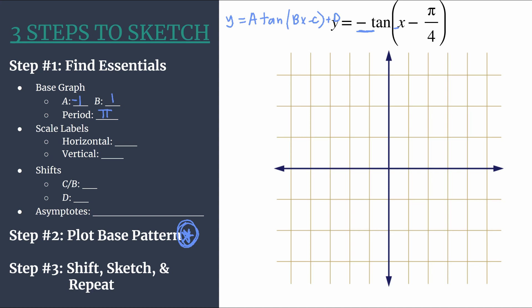Now that we have that information gathered, we can decide how to label our axes. For scale labels, this will be how we count each tick mark. We do this very intentionally for our horizontal axis. We take our period and divide it by four. That's what we'll use for our tick marks. So we'll count by π over 4. That ensures that every key piece that we plot for our base pattern and for our final graph will align nicely with the tick marks.